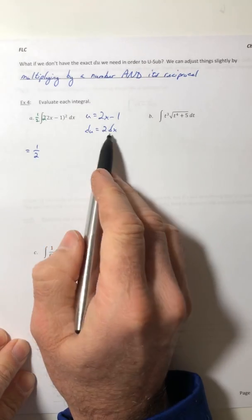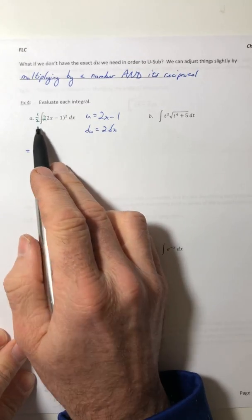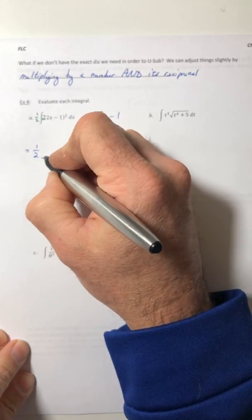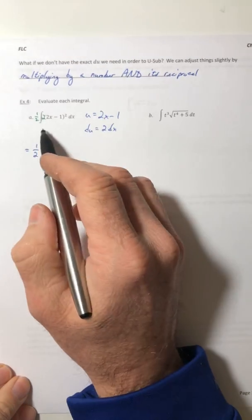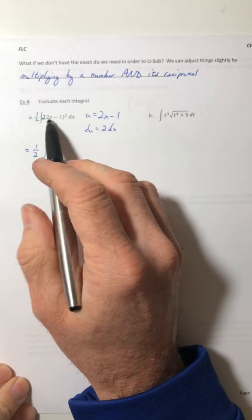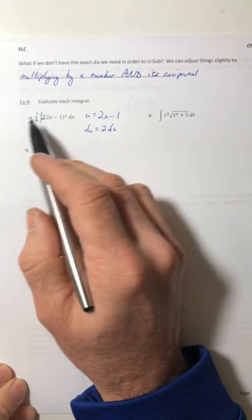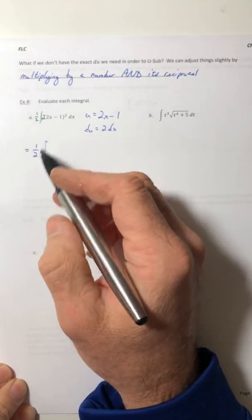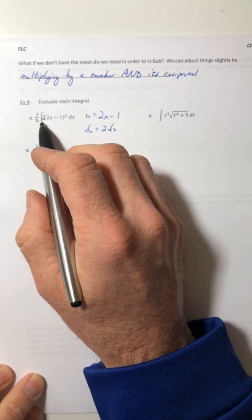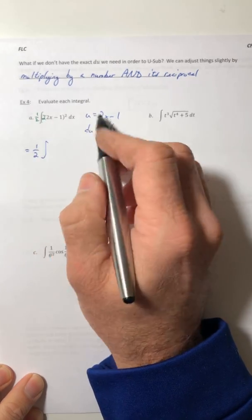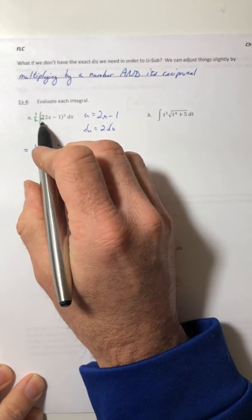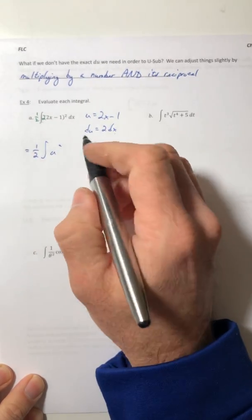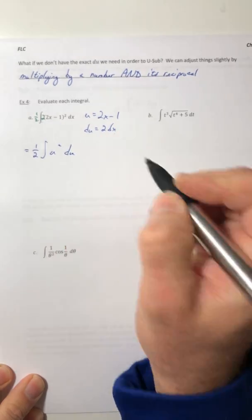And now I can do my substitution. So the half is gonna stay out there because it's the inside that gets switched around. The stuff on the outside doesn't get affected. So I can now switch this stuff into terms of u, so it would be u squared and the 2dx becomes du.